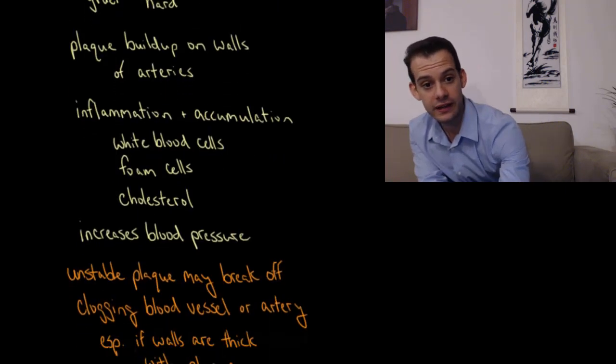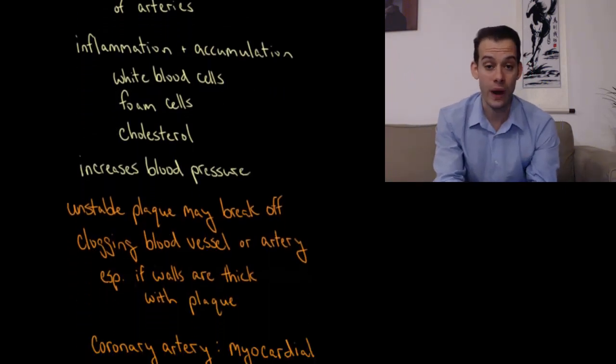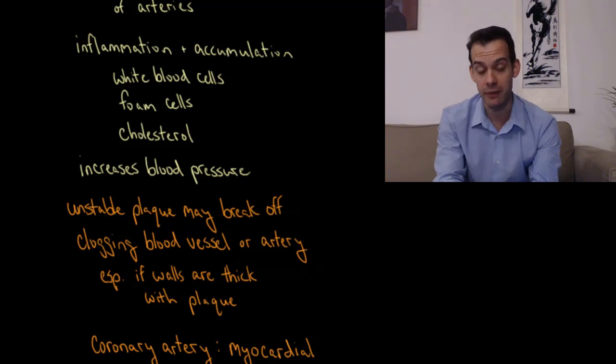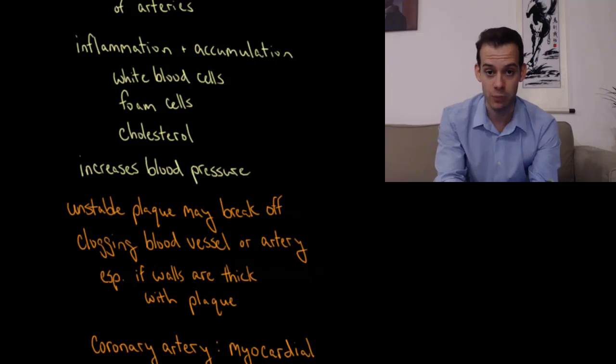And this is a result of inflammation of the arteries and then the accumulation of white blood cells, foam cells, which are macrophages that are bloated with lipids, and what you're probably familiar with, cholesterol. And so the buildup of these cells on the walls of the arteries means that the space inside the artery gets smaller and smaller, and this means that there's an increase in blood pressure. So blood is now whipping through these arteries more quickly.